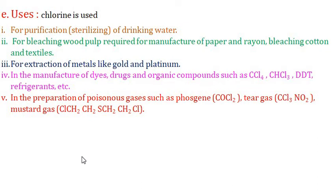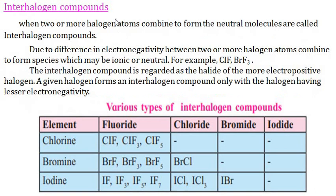An important topic for examinations is interhalogen compounds. When two or more different halogen atoms combine to form neutral molecules, they are called interhalogen compounds. This is an important topic for HSC board examinations. Due to differences in electronegativity between halogens, they may form ionic or neutral species — for example, ClF, BrF, etc.